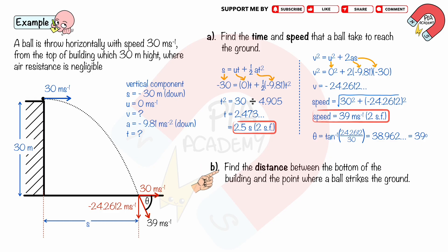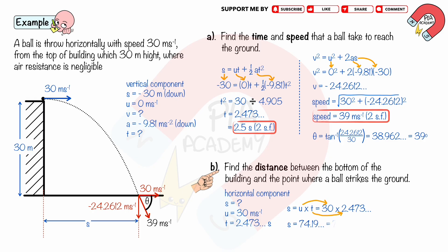For part b, find the distance between the bottom of the building and the point where the ball strikes the ground. In the horizontal component, the horizontal velocity is 30 meters per second and the time is 2.473 seconds. Using s equals ut, substituting u equals 30 and t equals 2.473, we get the horizontal distance s equals 74 meters for two significant figures.